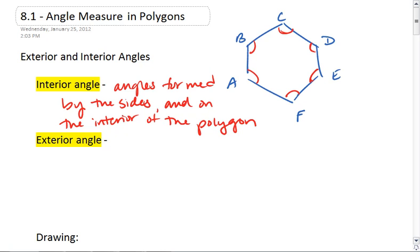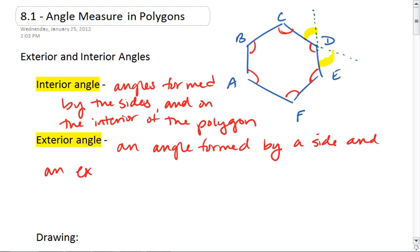We also could extend a side, could extend two actually if we want to. And this will form two exterior angles here. An exterior angle is an angle formed by a side and an extended side of the polygon.